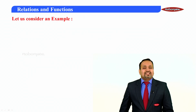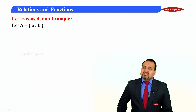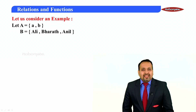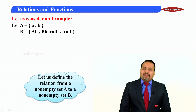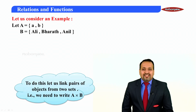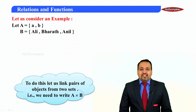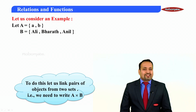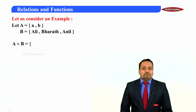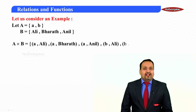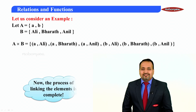Let us consider this example. A = {a, b} and B = {Ali, Bharat, Anil}. To define a relation from a non-empty set A to a non-empty set B, we need to write the cross product A cross B: (a, Ali), (a, Bharat), (a, Anil), (b, Ali), (b, Bharat), and (b, Anil).